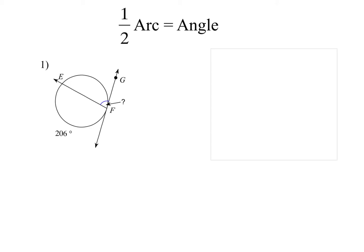Let's look at number one together. We have this angle right here — that's what they want. Always make sure you understand what they want. To find that angle measure, we know the angle is going to be one half of the arc — the arc that that angle creates. They did not give it to us, but we can find it. How do we find that arc measure?